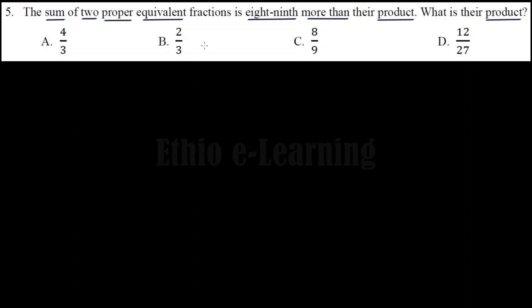The denominator and the fraction will have the same value. In other words, when you simplify to lowest terms, you get the same fraction. For example: one-half, two-fourths, three-sixths, four-eighths — these are equivalent fractions.